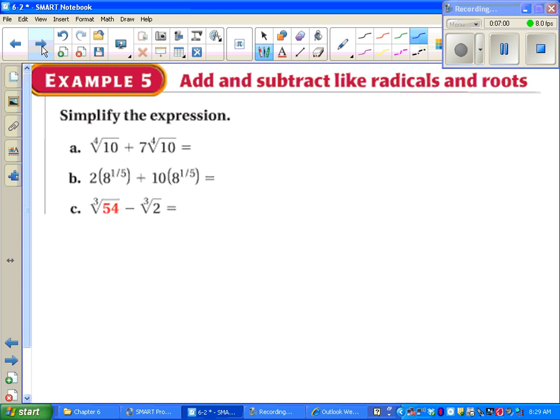Time to add and subtract radicals. If we have the same index and the same number inside the radical, we can just add them up just like we'd want to. 1 and 7 make 8, 4th root of 10. 8 to the 1/5th is on both, so I can just add them up. 2 plus 10 is 12 times 8 to the 1/5th. Notice I can't simplify the 4th root of 10 or the 5th root of 8 because the factor tree wouldn't get me far enough.